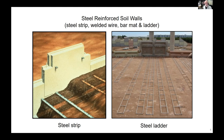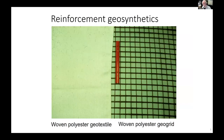Other types of reinforcement include geosynthetics — these are high performance polymeric materials. They can come in the form of sheets, for example a woven polyester geotextile as shown here, or a geogrid material with open apertures that are better able to engage with the soil. They're more flexible, but they still perform that same notional idea of improving the stiffness and strength of the backfill.